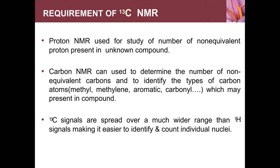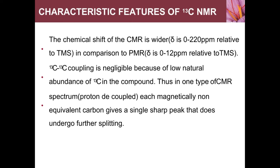C13 signals are spread over a much wider range than H1 signals, making it easier to identify and count individual nuclei. The chemical shift of CMR is wider, having a delta value ranging from 0 to 220 ppm with respect to TMS (tetramethylsilane), whereas PMR chemical shift values range from 0 to 12 ppm relative to TMS.